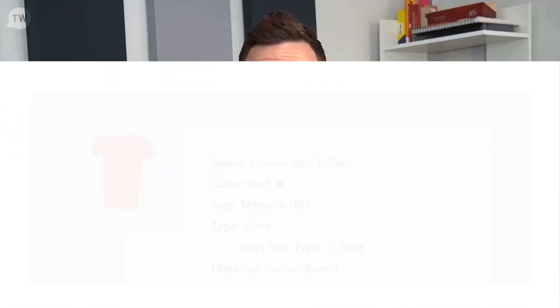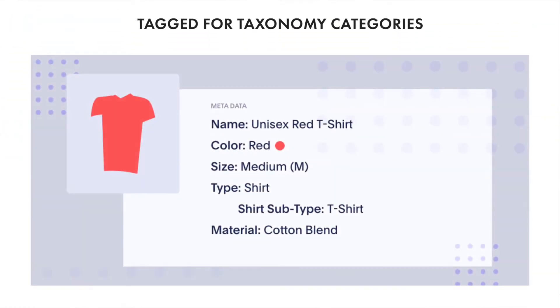You also have location and language tags, used to tell search engines what language or location the content was designed for. Metadata tags can be broad and customized to your needs. In our shop example, each clothing item would need to be tagged for our taxonomy's categories, meaning the metadata might look something like this: name — unisex red t-shirt; color — red; size — medium; type — shirt; shirt type — t-shirt; and material — cotton.